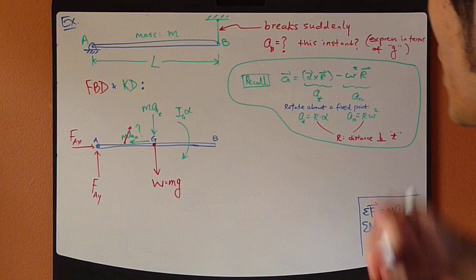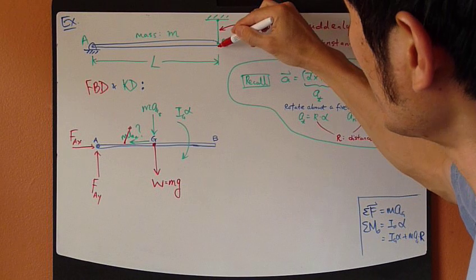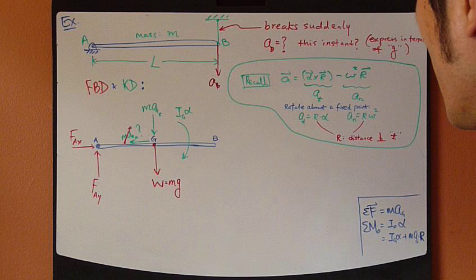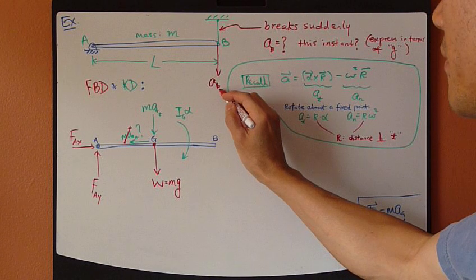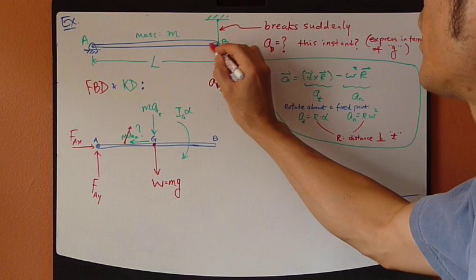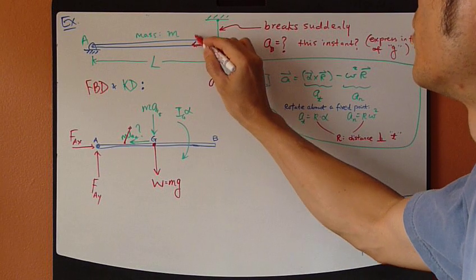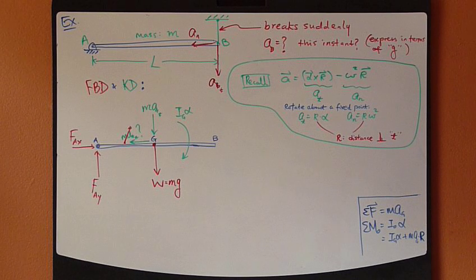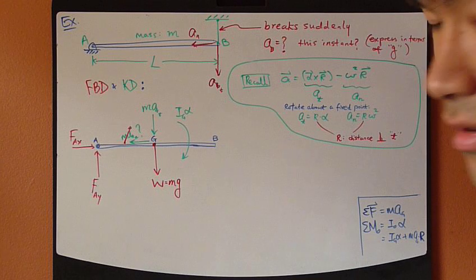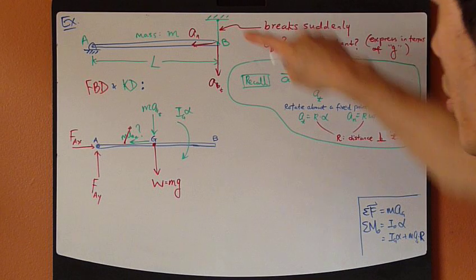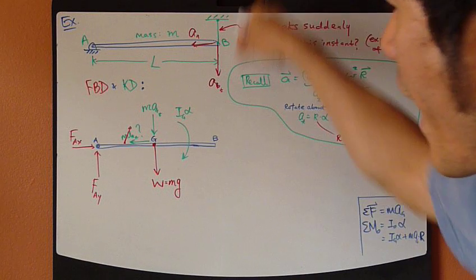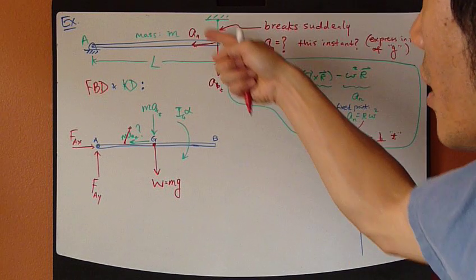So, acceleration at point B is something like this. And this is the tangent component. Now, what about the normal component? We should consider that because point B follows a circular path. From previous chapters, you realize that a point that's following a curved path always has two components, tangent and normal.